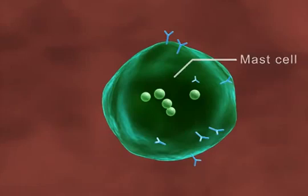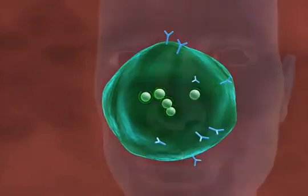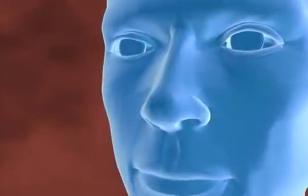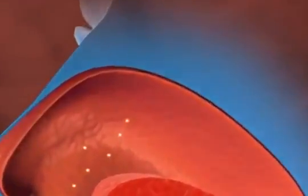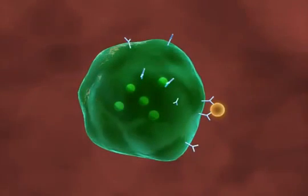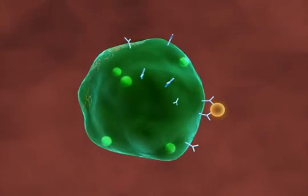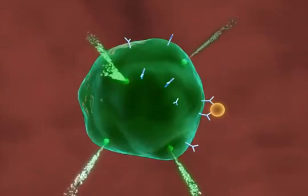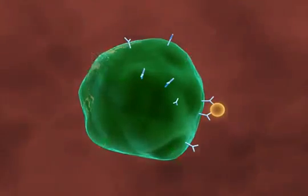The mast cells have granules containing chemical mediators like histamine and prostaglandins. On subsequent exposure, the allergen binds to the IgE antibodies present on the mast cells, cross-linking them. This results in the release of histamine, prostaglandins, and other mediators into the surrounding tissue.